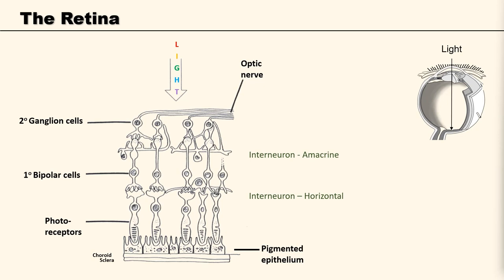Neural signals from the rods and cones undergo processing by other neurons whose output takes the form of action potentials in the retinal ganglion cells, whose axons form the optic nerve. Several important features of visual perception can be traced to the retinal encoding and processing of light. There are 10 layers of the retina, but these can be grouped into four main processing stages: photoreception, transmission to bipolar cells, transmission to ganglion cells, and transmission along the optic nerve.